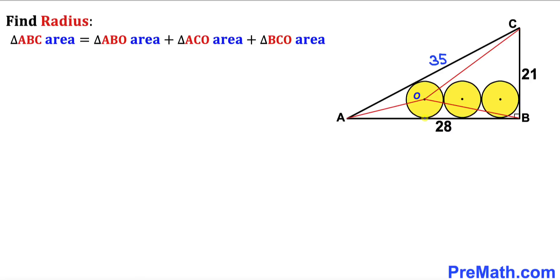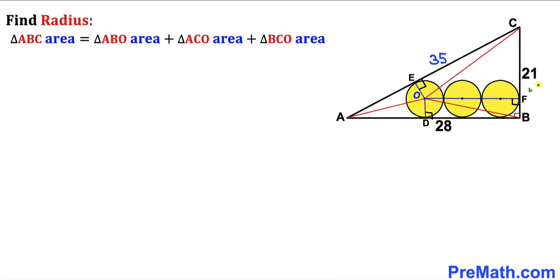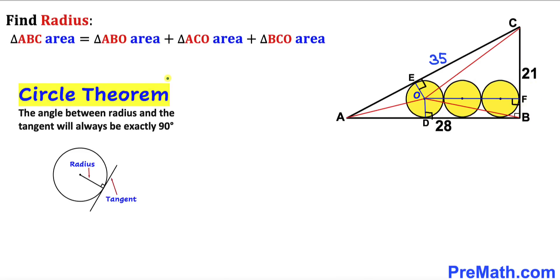Let's label the points of tangency as D, E, and F, and connect center O to each of these points. Recalling the circle theorem: the angle between a radius and a tangent is always exactly 90 degrees. So all these angles are 90 degrees, meaning OD, OE, and OF are the heights of triangles ABO, ACO, and BCO respectively.